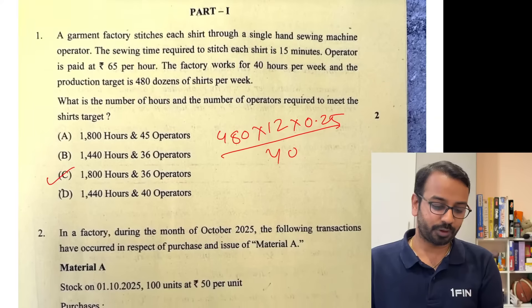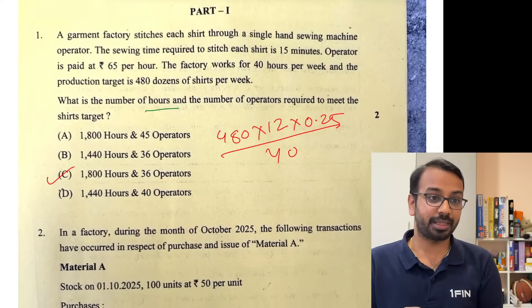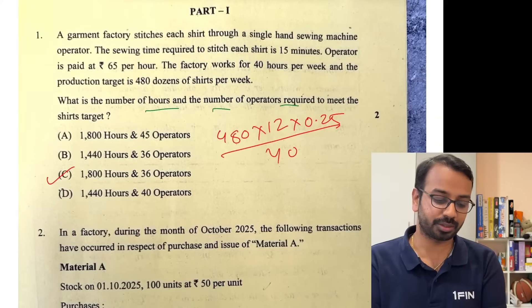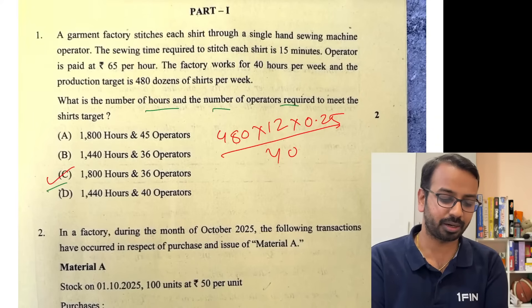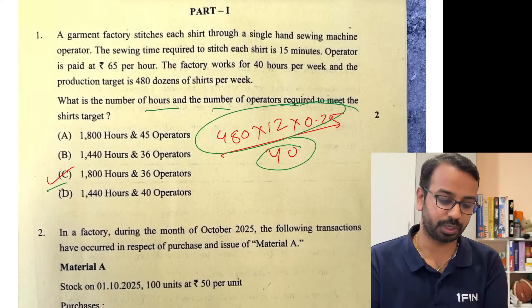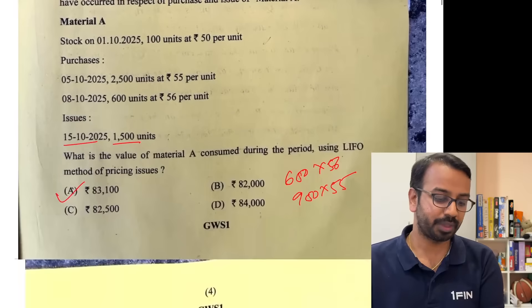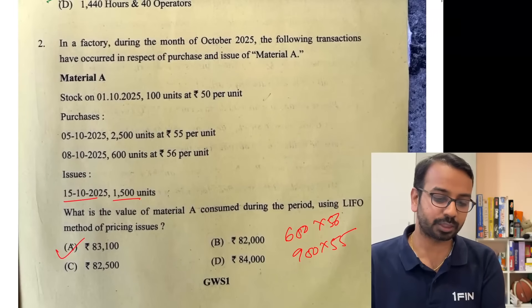The first question was on calculation of number of hours and the number of operators required to meet the target. We can calculate 1800 hours, and given the number of hours worked, we get 1800 and 36 operators.